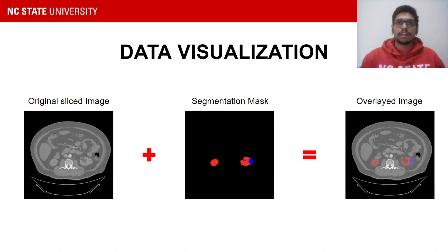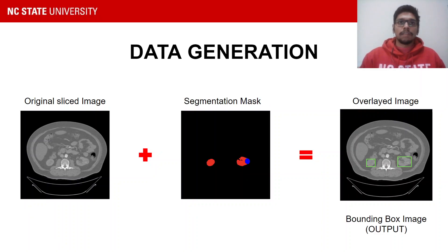The red color highlights the kidney and the blue color highlights the tumor. The slide shows the data visualizations of the kidney and tumor where the overlaid image is the result of both combined. The image on the right-hand side shows the bounding boxes calculated using the segmentation masks. The bounding box coordinates are used to train the object detection model.